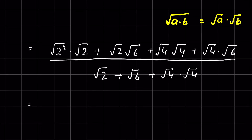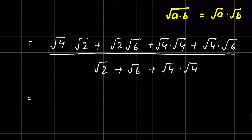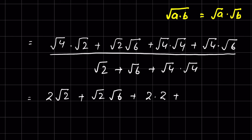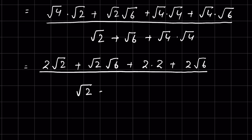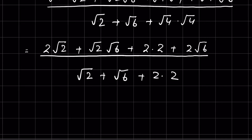Square root of 2 squared is 2, and square root of 4 is 2. So we get 2 times square root of 2, plus square root of 2 times square root of 6, plus square root of 4 is 2 and square root of 4 is 2, so 2 times 2, plus square root of 4 again times square root of 6.